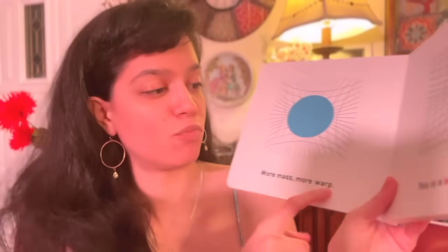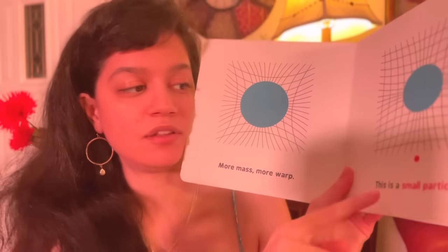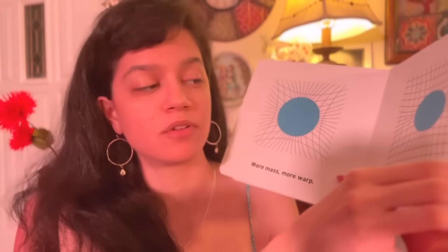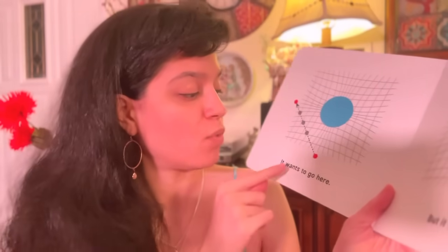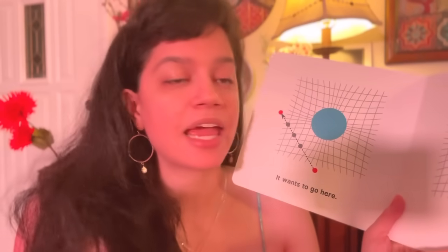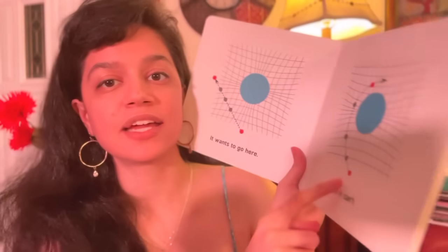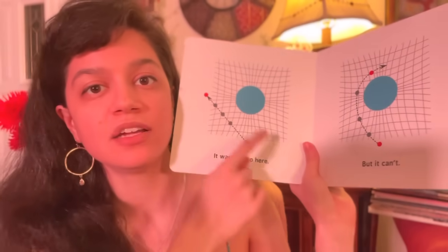Then more mass, more warp. And then this is a small particle right there. That's a particle. It wants to go there, right? But it can't. Why can't it go right there? Because it's like when you're having a paper towel and it's flat, and then you put a ball in the middle, and it makes it indent. When you try to go from here to there, it's going to make it roll. So it's not going to be a straight line — it's going to roll downwards. That's science.